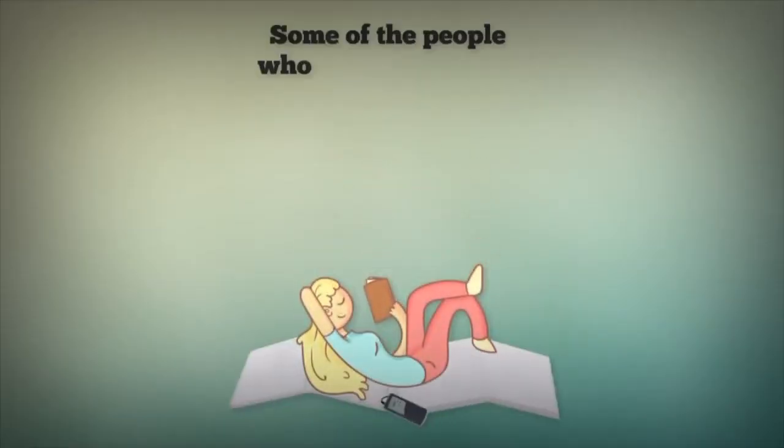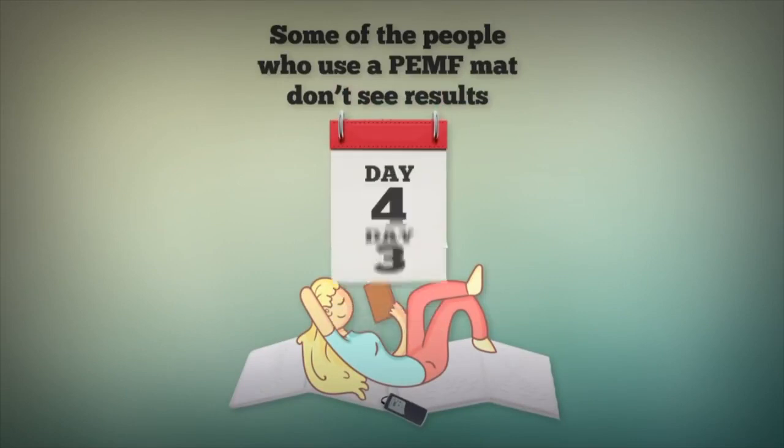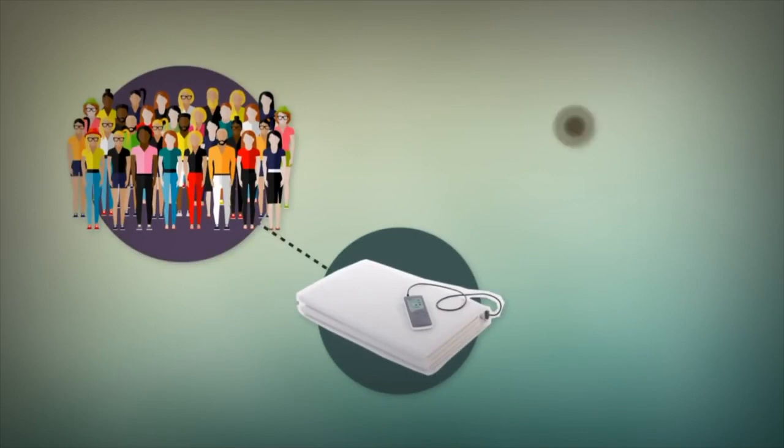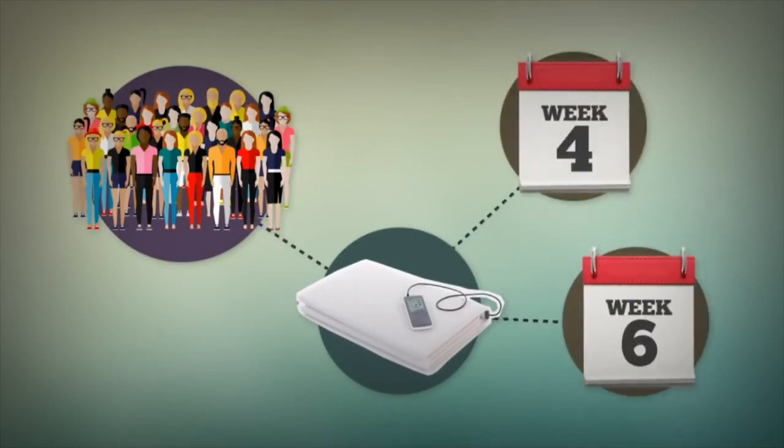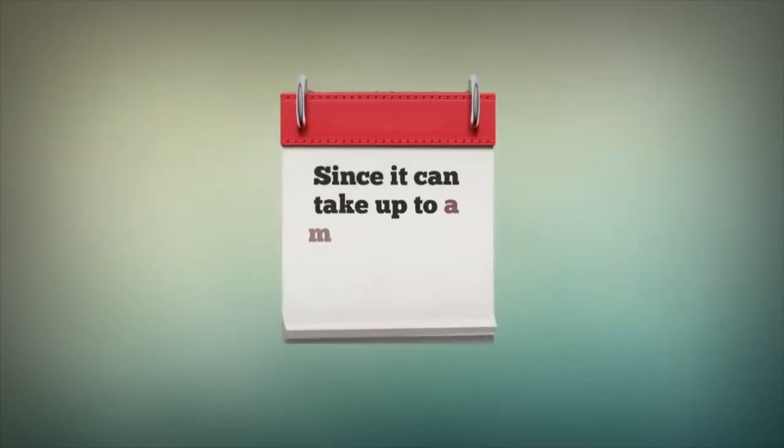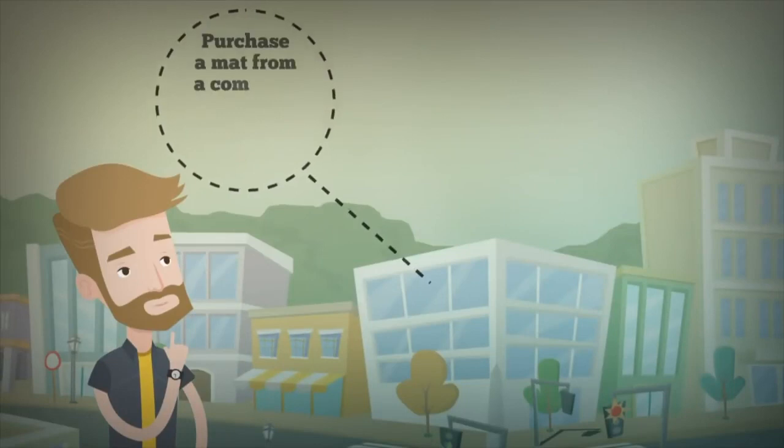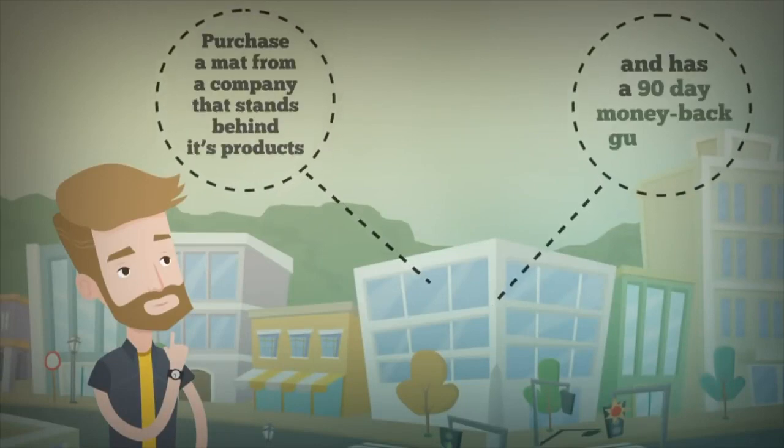Some of the people who use a PEMF mat don't see results until they've used the mat for at least a week. Many folks don't see results until they've used the mat for three to four weeks, and sometimes it takes four to six weeks to see results. Since it can take up to a month and a half to see results, it's important to purchase a mat from a company that stands behind its products and has a 90-day money-back guarantee.